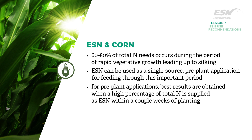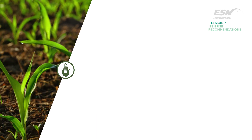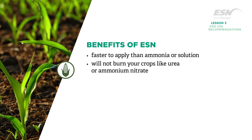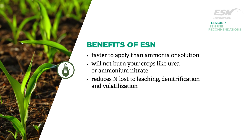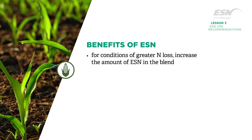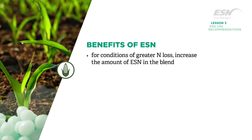Within a couple weeks of planting, ESN is a better resource because it is faster to apply than ammonia or solution. It will not burn your crops like urea or ammonium nitrate, and it reduces nitrogen loss to leaching, denitrification, and volatilization.